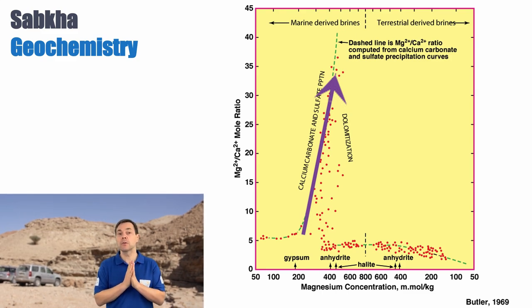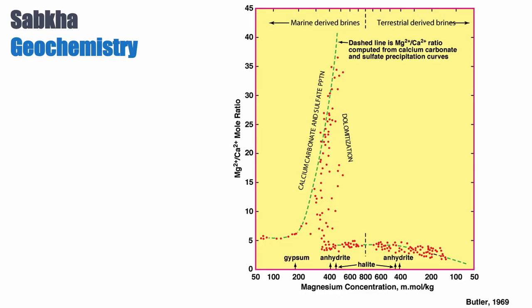By increasing the magnesium-to-calcium ratio, you end up with a solution with much more magnesium and less calcium — and eventually you reach a point where you're supersaturated with respect to dolomite, and then dolomitization occurs. You can dolomitize the existing limestone, but you can also precipitate a dolomite cement. As you dolomitize, you use the magnesium present in the pore water, so that Mg/Ca ratio then decreases over time, until eventually only anhydrite and then halite are precipitated, but no more dolomite.